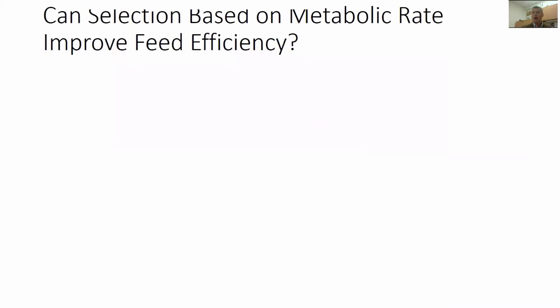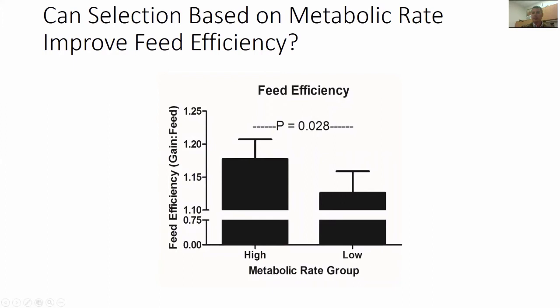The next question: can selection based on metabolic rate improve feed efficiency? We weren't able to measure feed efficiency at Desert Springs Tilapia since feed isn't weighed there. We developed a system at the University of Arizona and subsequently measured feed efficiency. When we select the high metabolic rate group, we do improve feed efficiency relative to the low metabolic rate group. The improved growth was in fish fed the same amount of feed, and here we show actually improved feed efficiency.